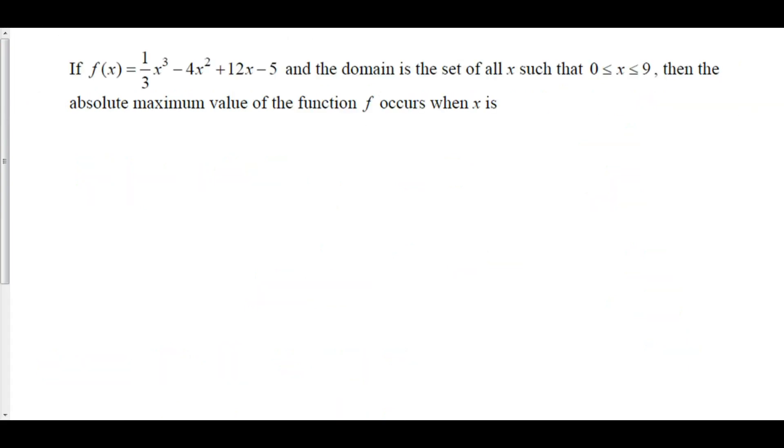Let's do one more. If f and the domain is the set of all values such that 0 ≤ x ≤ 9, then the absolute maximum value of f occurs when x is... And let's finish that sentence. So first, let's find the critical points.